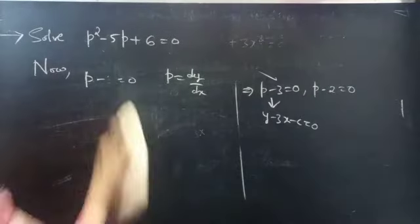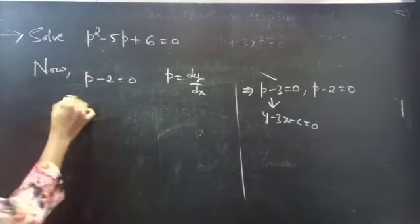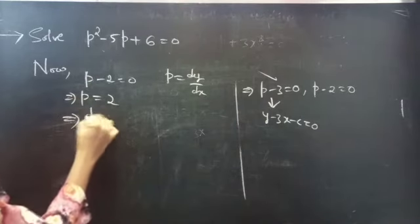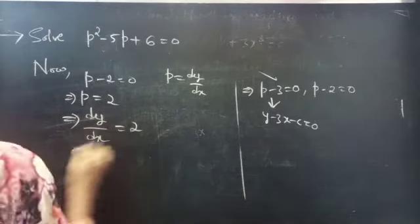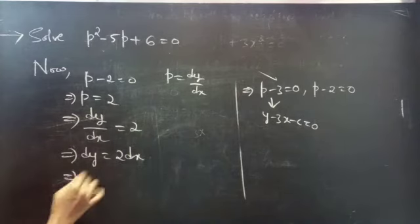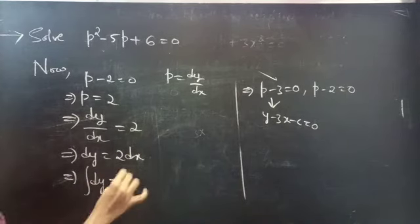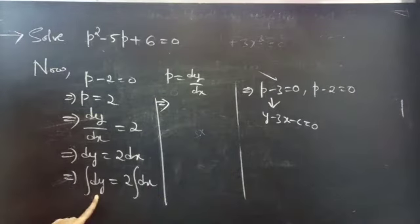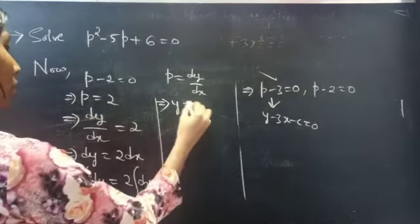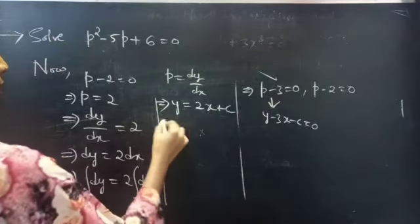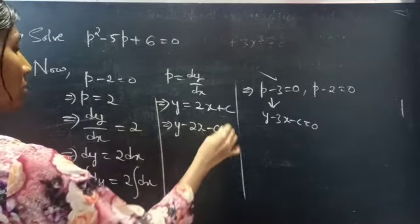Now, find solution for P minus 2 equals to 0. You can write this as P equals to 2. Put P equals to dy by dx. Again, you can write this as dy equals to 2 into dx. Now, integrate on both sides. Integral dy equals to 2 into integral dx. Then, y equals to 2x plus c. So, y minus 2x minus c equals to 0. This is the solution for the second one.